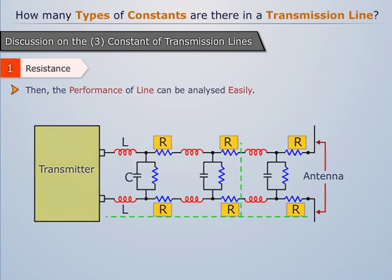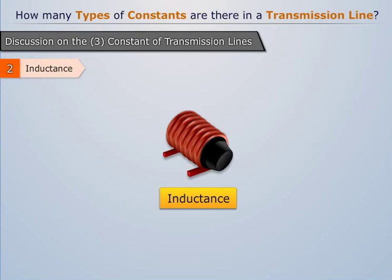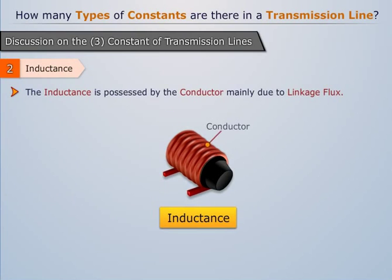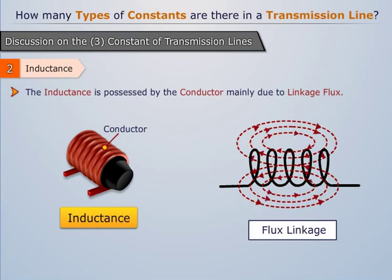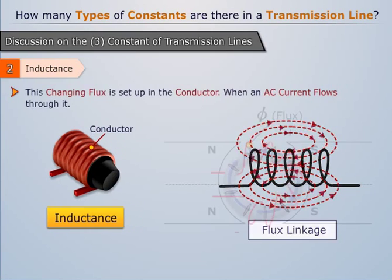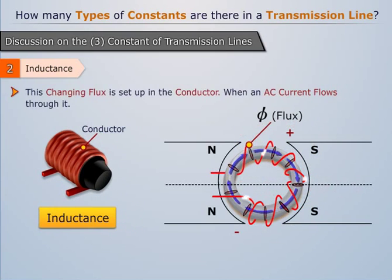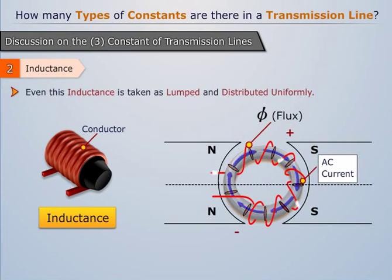Now the next constant variable is inductance. The inductance is possessed by the conductor mainly due to linkage flux. This changing flux is set up in the conductor when an AC current flows through it. Even this inductance is taken as lumped and distributed uniformly.